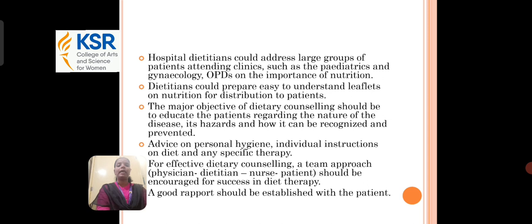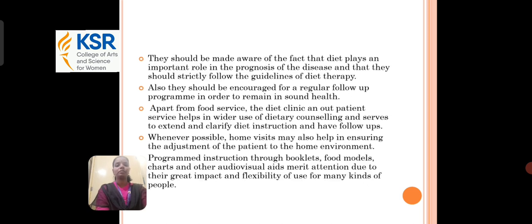A good rapport should be developed with the patient. They should be aware of the fact that diet plays an important role in the prognosis of disease and they should strictly follow the guidance of diet therapy. They also should be encouraged for a regular follow-up program in order to remain in sound health. Whenever possible, home visits may help in ensuring the adjustment of the patient to the home environment.